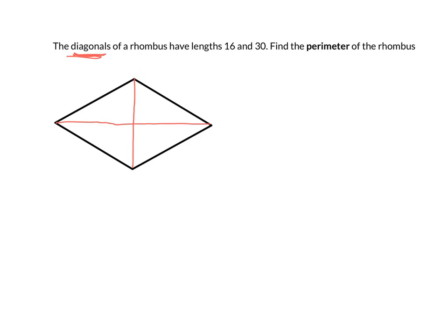Diagonals bisect each other in a rhombus, and so that means that this is 15 and this is 15. And if that's 16, they're going to be 8 and 8. So that's the first thing, and that's because the diagonals bisect each other in a rhombus.